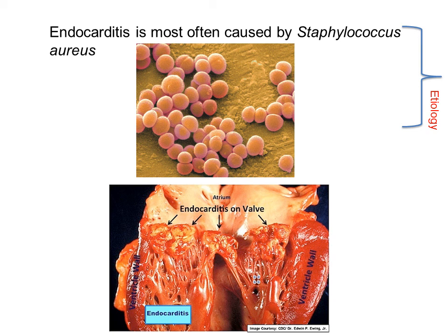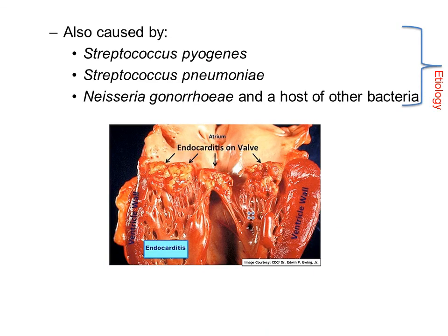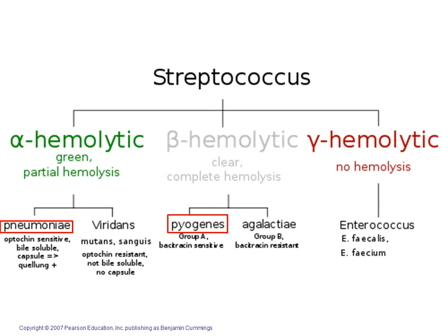Endocarditis is most often caused by Staphylococcus aureus, but it can also be caused by Streptococcus pyogenes, Streptococcus pneumoniae, Neisseria gonorrhoeae, and other forms of Streptococcus like Streptococcus viridans. Streptococcus has many groups based on the sugar that makes up the cell wall, or it can be further divided into groups based on a protein in the cell wall — the Lancefield classification scheme.